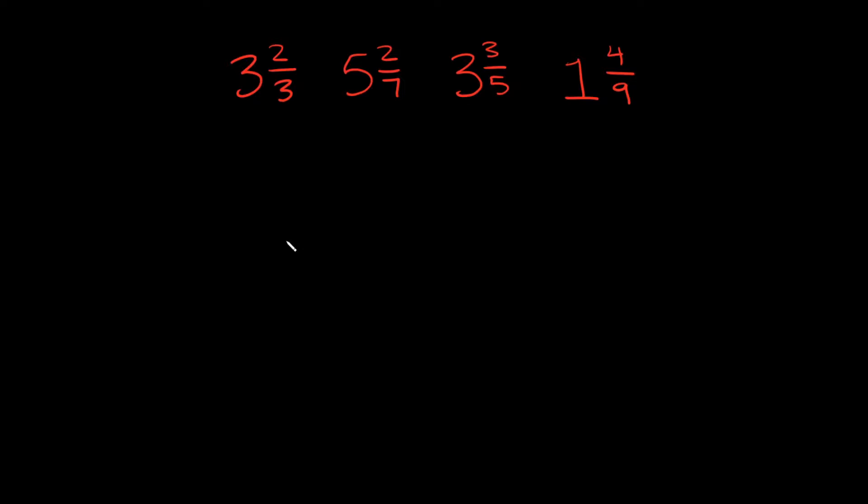And these are actually easier than you probably think because all we really have to compare are their whole numbers. So 3, 5, 3, and 1 because you can kind of think of these like money. This is like saying I have $3 plus some change. This one is like saying I have $5 plus some change. Same thing with this one. This is like $3 plus some change, and this one is like $1 plus some change.